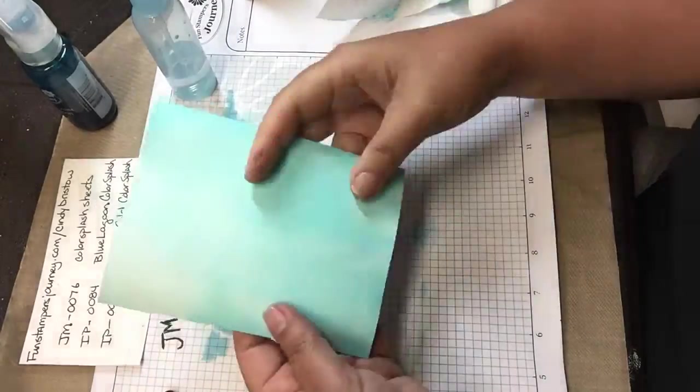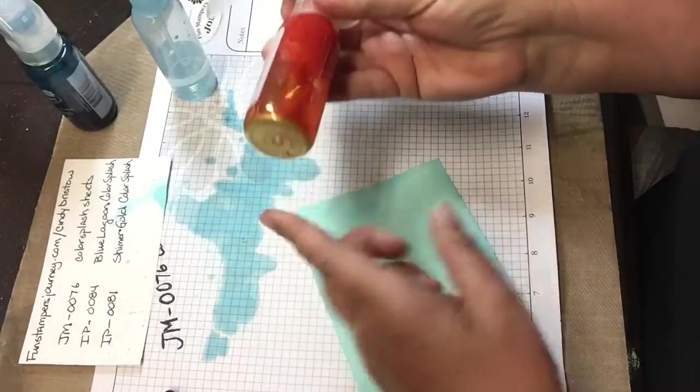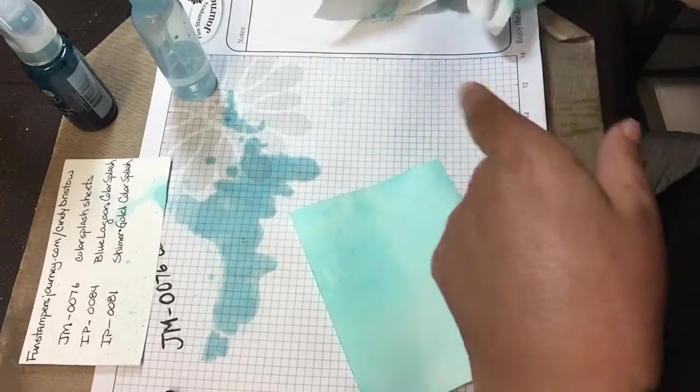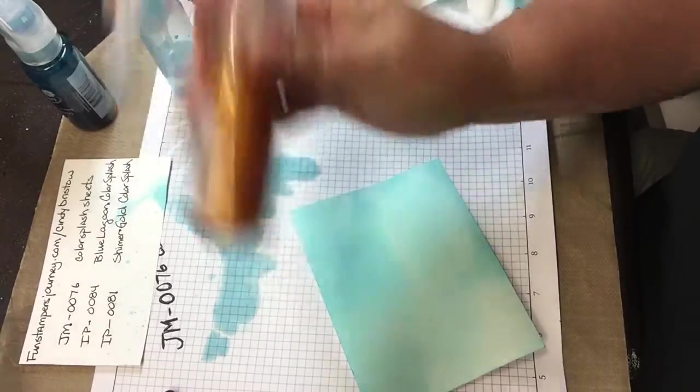That's how I got that nice watercolor look of the blue. Then see, check out all this mica flake in the bottom of the gold shimmer. Definitely shake it up.